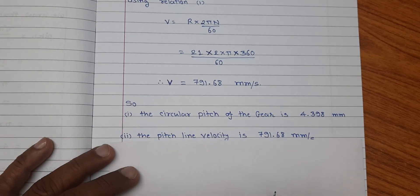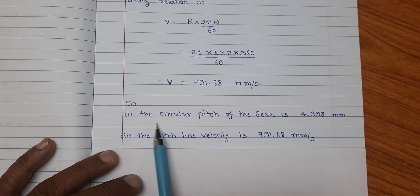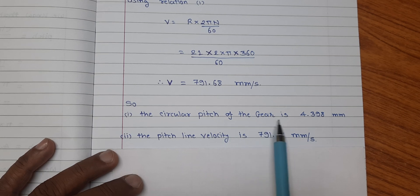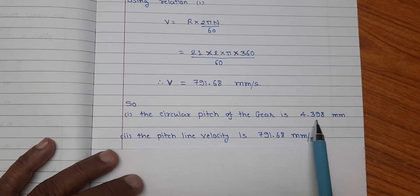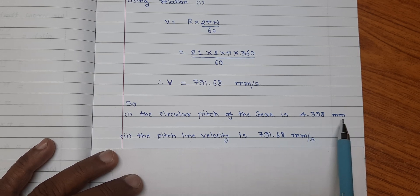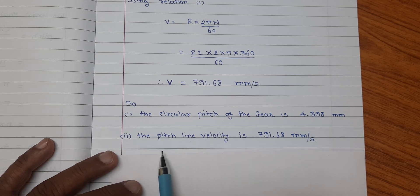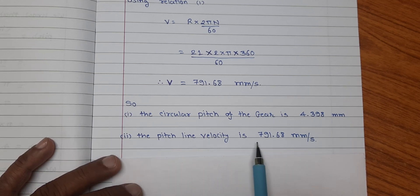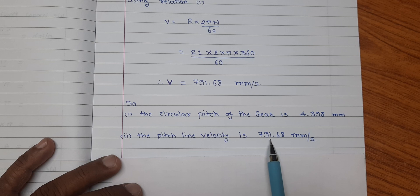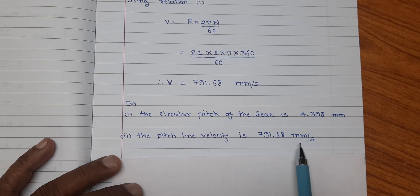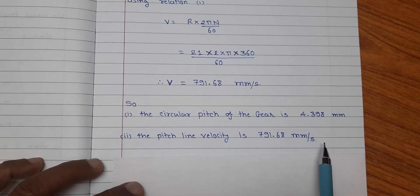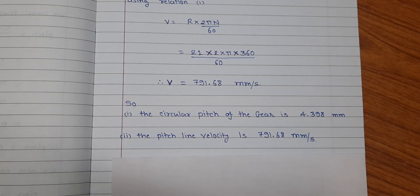So we can conclude that the circular pitch of the gear is 4.398 mm and the pitch line velocity of the gear is 791.68 mm per second. Thank you friends.